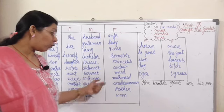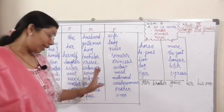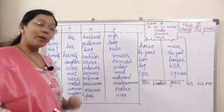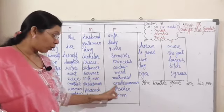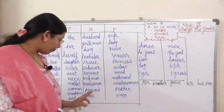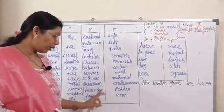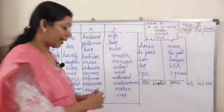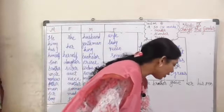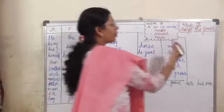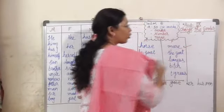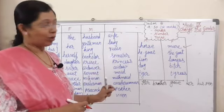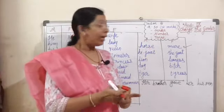Note: Washerman does not become Washermaid — we have to remember this. Washerman — washerwoman. Peacock — peahen. Fox — vixen. Horse — mare. Remember this. In the last board exam, it was asked: horse becomes mare.